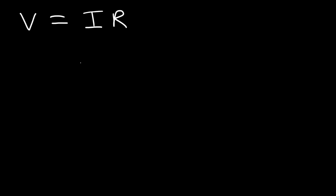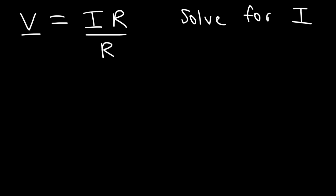Here's another example: V equals IR. This is Ohm's law for circuits — voltage is equal to the current multiplied by the resistance. Solve for the current. Notice that the resistance is multiplied to the current, so we need to divide both sides by R. So V over R is equal to I. It's a one-step problem.